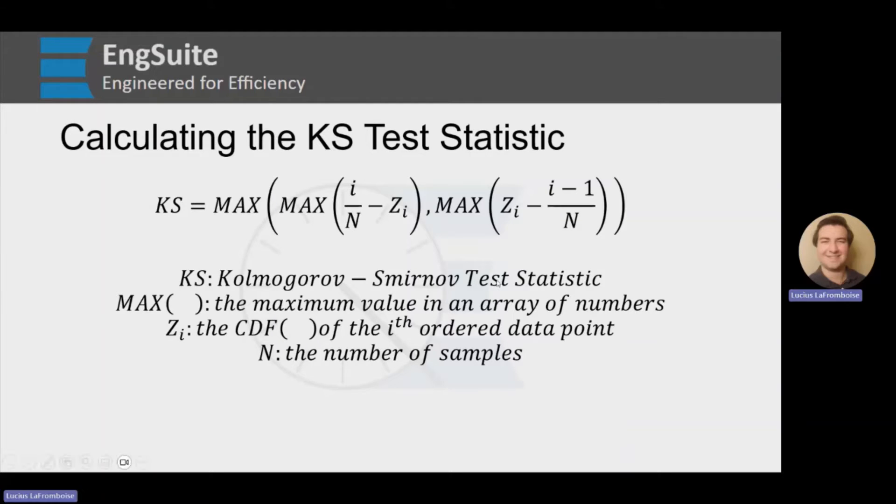If you were to take all of your values, all of your samples, and you were to plug them into this first equation and take the maximum of that, then you take them all again and you plug them into the second equation and take the maximum of that, the maximum of those two maximum values would be your KS test statistic.